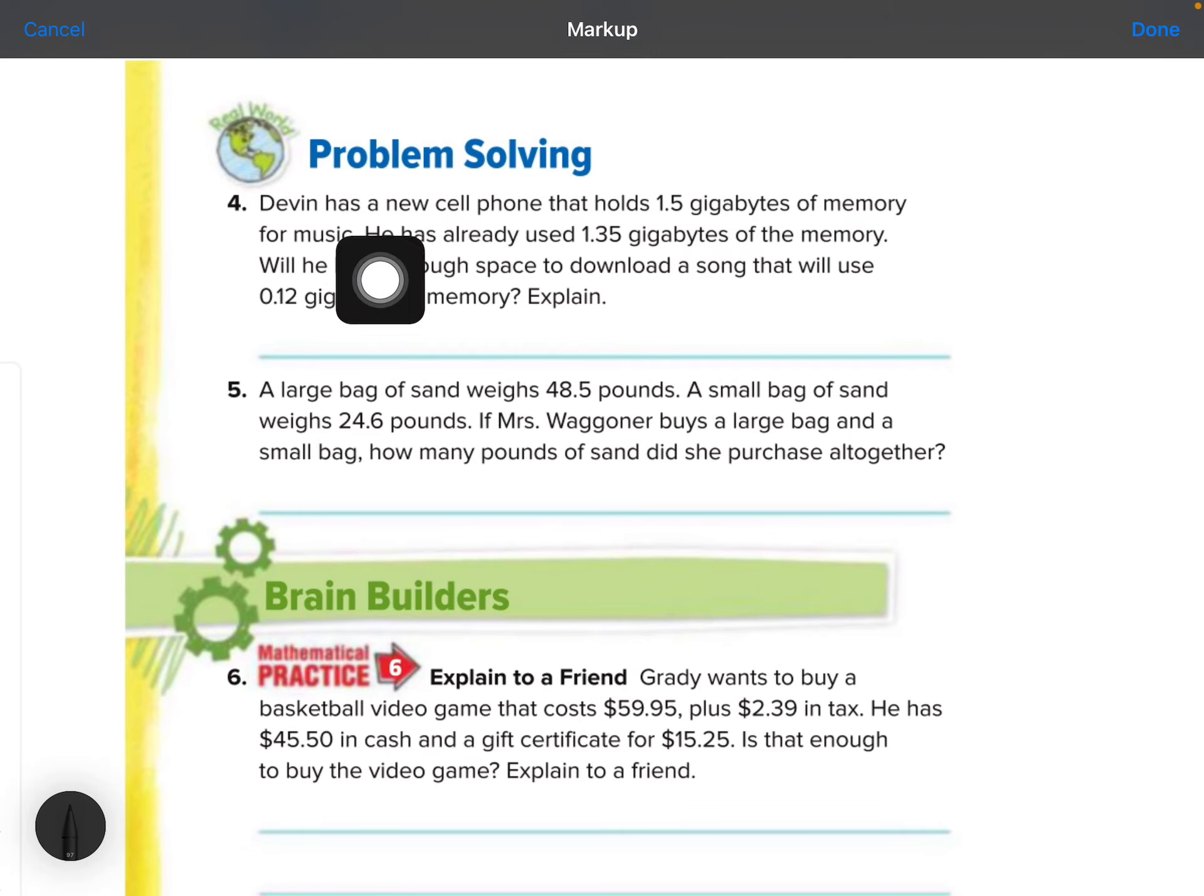Devin has a new cell phone that holds 1.5 gigabytes of memory for music. He has already used 1.35 gigabytes of memory. Will he have enough space to download a song that will use 0.12 gigabytes of memory? Explain. Okay, now they purposely made these numbers super confusing. You have to stack them up. So he has a phone that can hold 1.5 gigabytes. He's already used 1.35. Can you see a problem here?